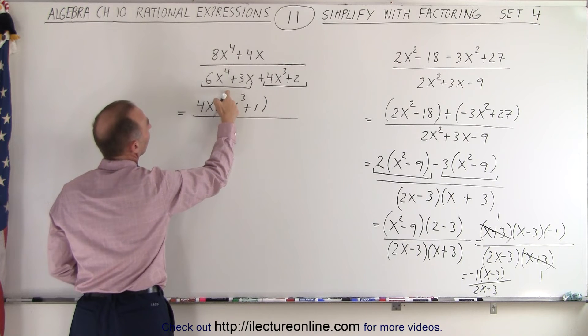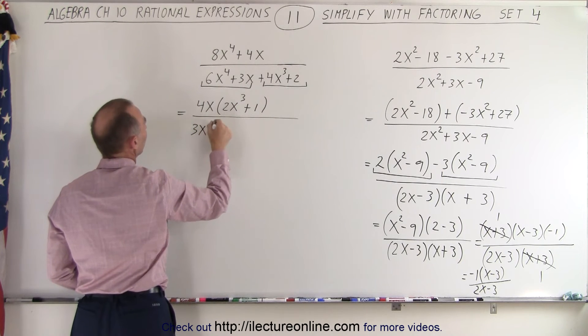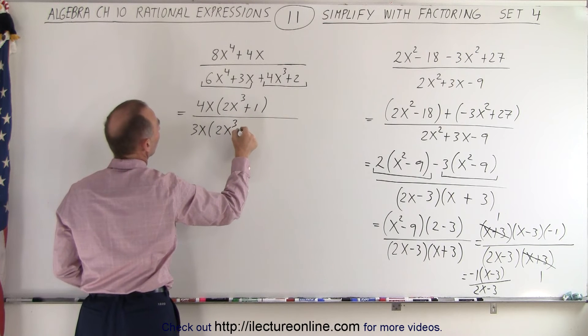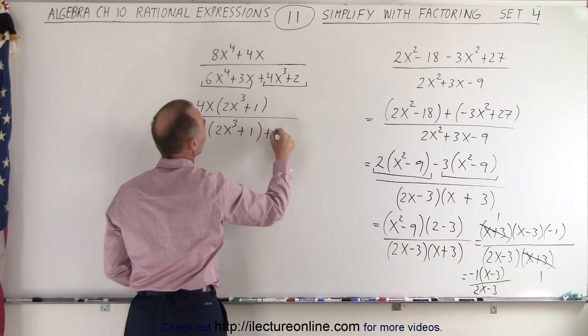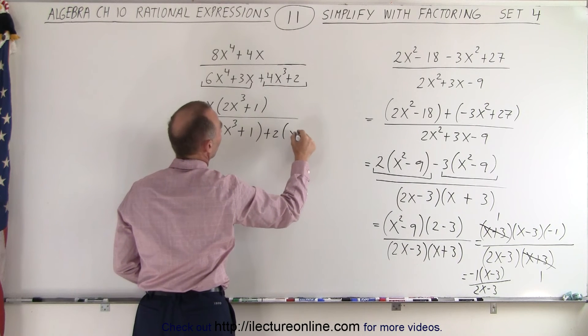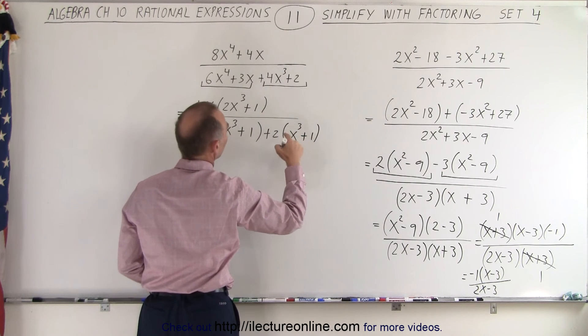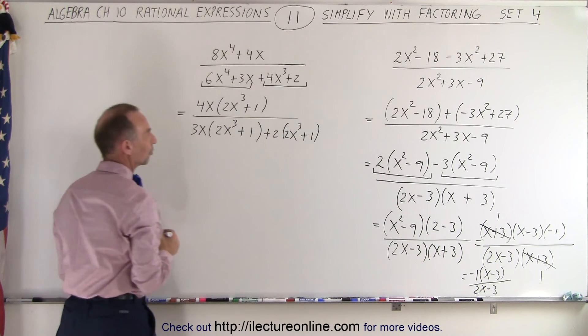Over here, what's common would be a 3x, that leaves us with a 2x cubed plus 1. And over here, we can factor out a 2, that leaves us with a 2x cubed plus 1.